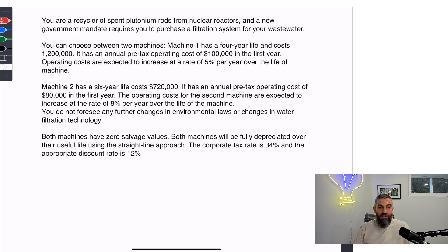Machine number two has a six-year life, costs $720,000, has an annual pre-tax operating cost of $80,000 in the first year. The operating costs are expected to increase at a rate of 8% per year over the life of the machines. You do not foresee any further changes in environmental laws or changes in water filtration technology. Both machines have zero salvage values. Both machines will be fully depreciated over their useful life using the straight line approach. The corporate tax rate is 34% and the appropriate discount rate is 12%.